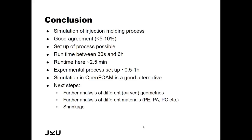I do not claim this is always the case — for complex geometries the simulation will take longer than experimental trial and error. But for very large geometries, such as a car bumper, you don't want to run 50 or 100 experiments just to set up the process. You can run a simulation, get a very good first idea of where your process window is, then go to the machine, set up the process window, and do a smaller parameter study to find the best settings for your process.